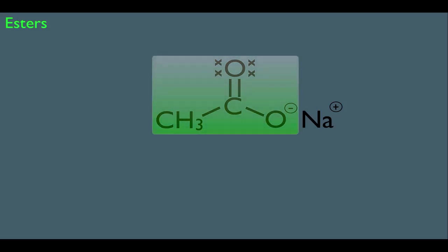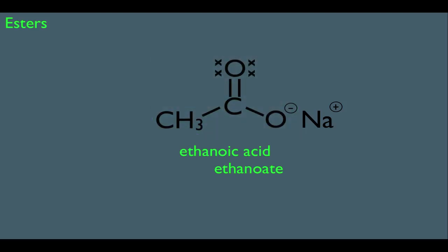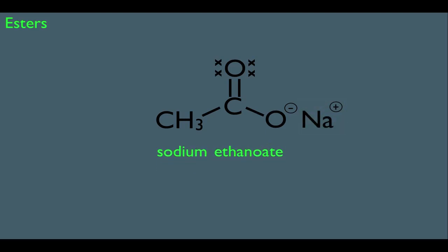Starting with this side of the molecule: if it were a carboxylic acid, it would be called ethanoic acid, but we change that to ethanoate — just like it were some kind of ester. However, instead of having an OR group on the carboxyl side, we have a sodium. You simply list that sodium as if it were some kind of alkyl group, so the name of this molecule is sodium ethanoate. The common name is sodium acetate. We're going to see this molecule a lot in the next few chapters, so definitely take note.